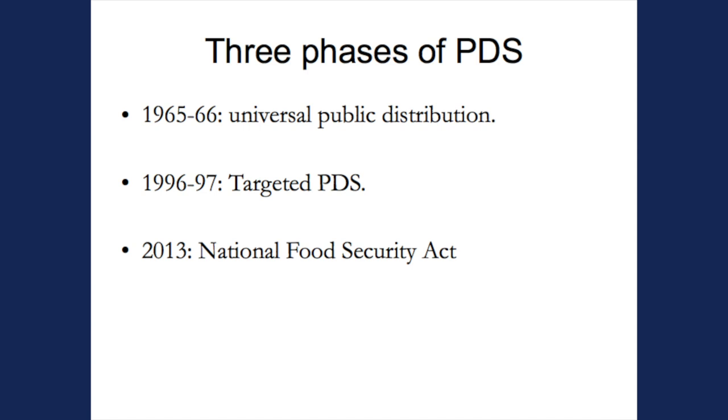Briefly, public distribution started in India — it was started by the British as a wartime rationing measure in 1942. Then in the mid-60s, as part of a major overhaul of food security in India from the production side and the distribution side, it was announced it would become a universal program of food rationing. That was the same time as the Food Corporation of India and the Commission on Agricultural Costs and Prices. Producers and consumers were seen together as part of the food security system — that's one of the points I want to make today.